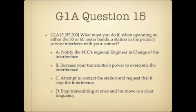Question 15. What must you do when operating on either 30 or 60 meter bands, a station in the primary service interferes with your contact? A. Notify the FCC's regional engineer in charge of the interference. B. Increase your transmitter power to overcome the interference. C. Attempt to contact the station and request that it stop the interference. Or D. Stop transmitting at once and or move to a clear frequency.